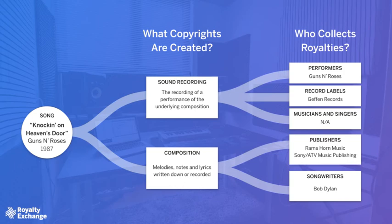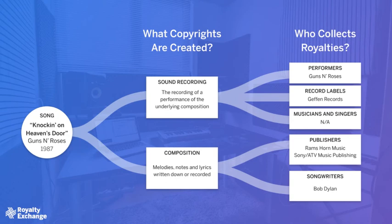There can only be one composition copyright for a song, but one song could have multiple master recordings. So let's look at the Guns N' Roses version of Knockin' on Heaven's Door. Guns N' Roses and their label, Geffen Records, collect the sound recording royalties for the version of the song that they recorded. Bob Dylan and his publisher, meanwhile, collect the composition royalties because Guns N' Roses used his original composition for their recording. Bob Dylan does not collect royalties for the Guns N' Roses sound recording — only Guns N' Roses collects that — but Bob Dylan does collect on the composition.